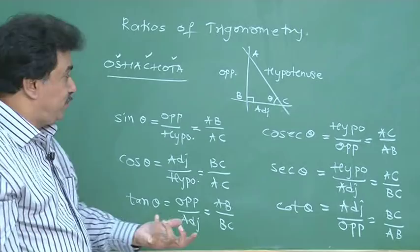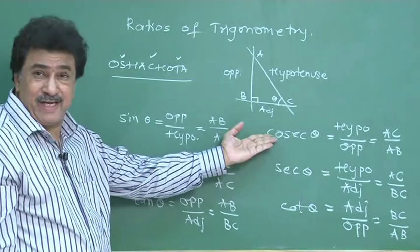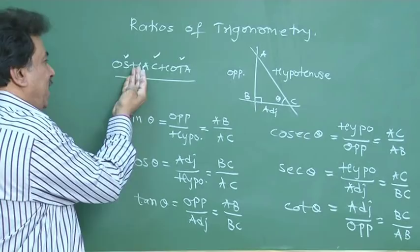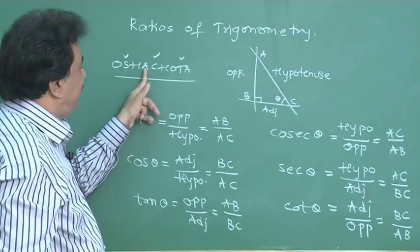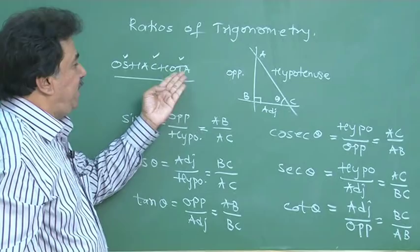To use the mnemonic for the remaining three ratios: cosec is 1 upon sine theta — reciprocal of sine, so just reverse it: hypo upon opposite. Sec theta is the reciprocal of cos — hypo upon adjacent. And cot is the reciprocal of tan — so adjacent upon opposite.